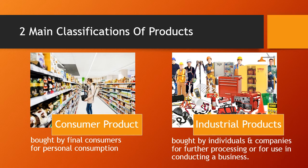Capital items are industrial products that aid in the buyer's production or operation, including installations and accessory equipment. Installations are capital items consisting of major purchases such as buildings and fixed equipment — anyone who's seen a car manufacturing line has seen those huge robots that help build cars. Supplies and services include operational supplies and repairs and maintenance of items used within the firm. Supplies are like the convenient products of the industrial world, purchased with minimum effort — at a university, we go through so much paper we don't really think much about reordering it.